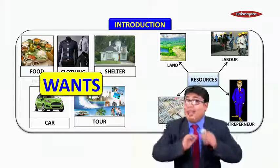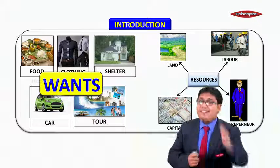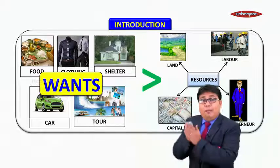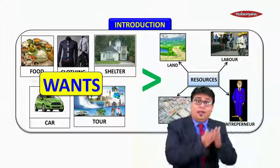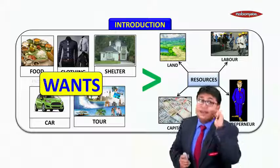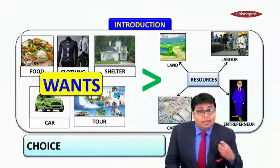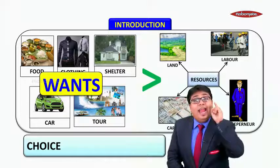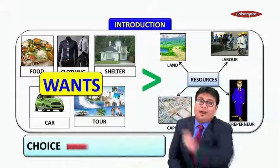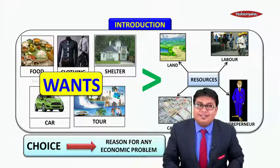We are humans and human wants are unlimited. So when I compare wants and resources, the wants are always more compared to resources. Whenever I compare my unlimited wants with the given amount of resources, the wants are always more. Hence, as a consumer we have to make a choice. We cannot satisfy all wants at the same point of time, and this choice is the reason for any economic problem.